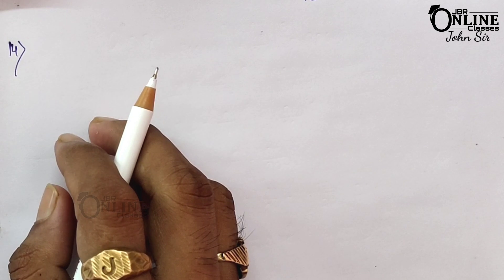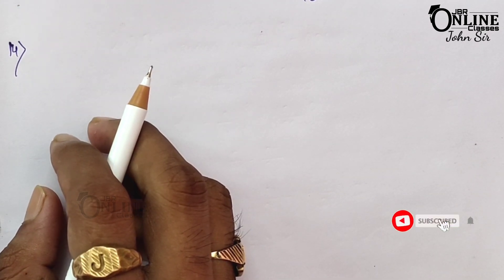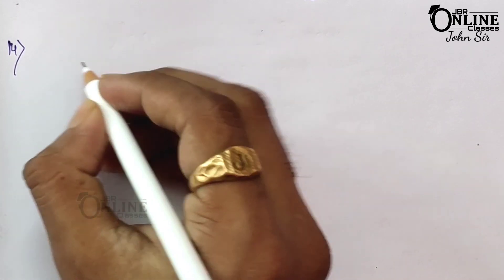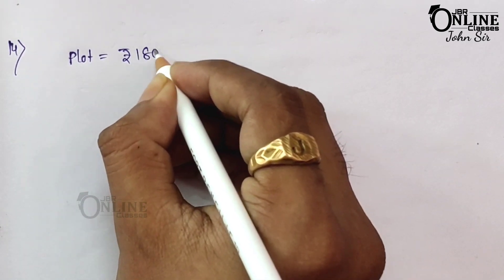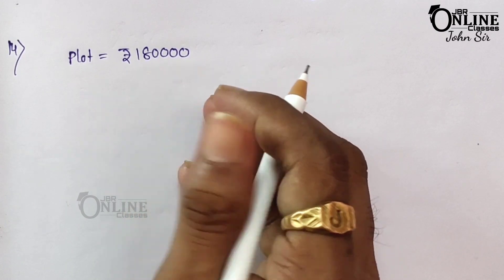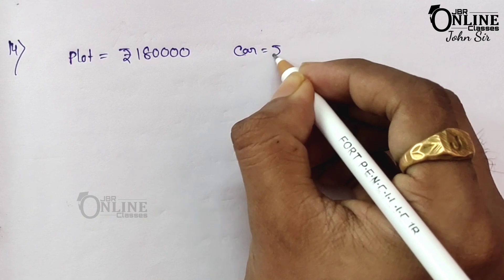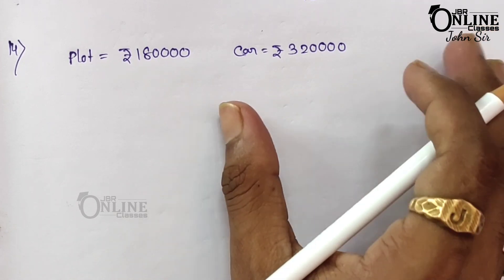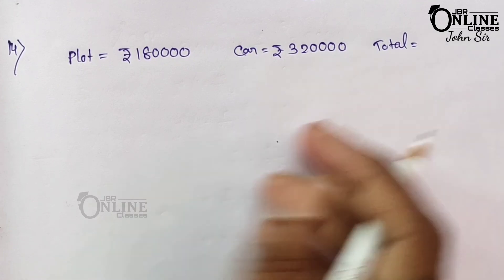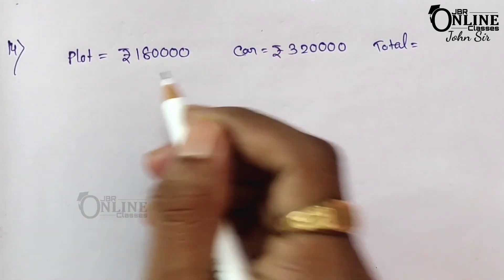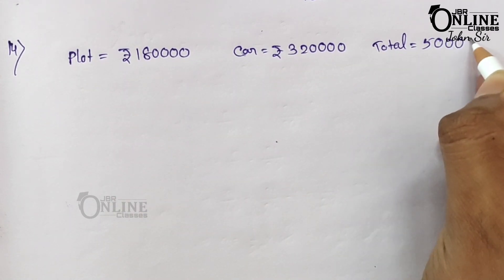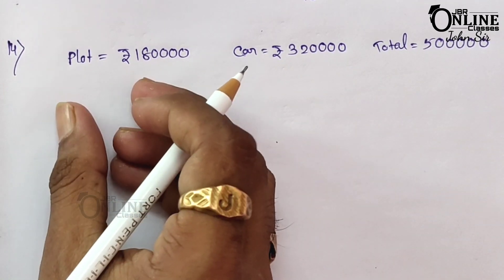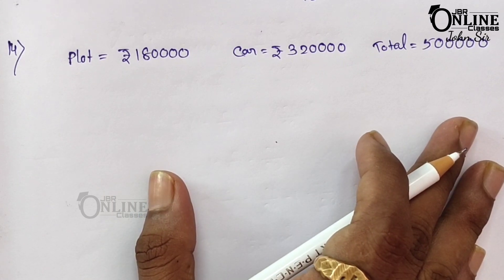Sum number 14 is the last sum for this video and for this exercise. Mr. Durani bought a plot of land for rupees 1 lakh 80,000 and a car for rupees 3 lakh 20,000. The total price of the plot and the car = 1,80,000 + 3,20,000 = rupees 5 lakh.